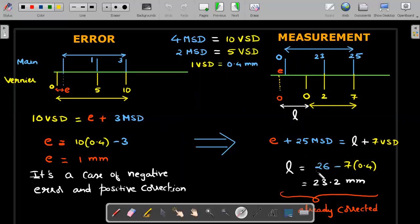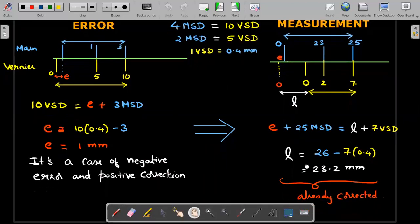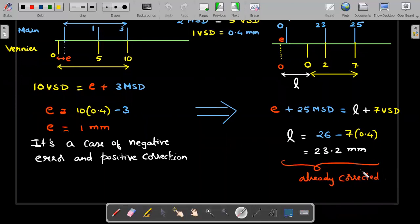Do we need to correct this? No, it's already corrected because of the concept that you have used. You are adding some quantity and that's the positive correction. 25 MSD is 25 mm, E is 1 mm, so this is 26. 7 VSD is 7 into 0.4. Answer is 23.2. Don't make the mistake of correcting it again. It's already corrected. So one answer we got is 23.2 in the options.